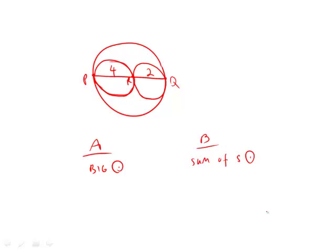The answer would be 4π plus 2π, or 6π. Now if these two are 4 and 2 respectively, that means the diameter of the larger circle is 6, and you get 6π for the circumference of the larger circle. So that's interesting — you just plug in numbers at random and we got the same answer.